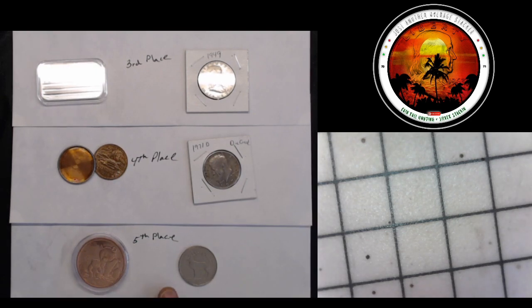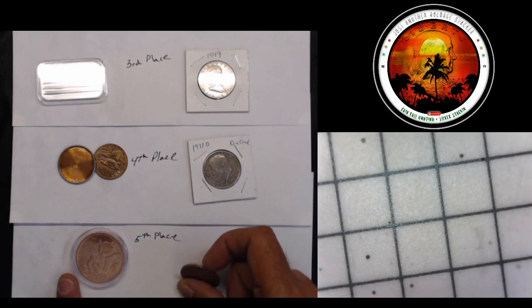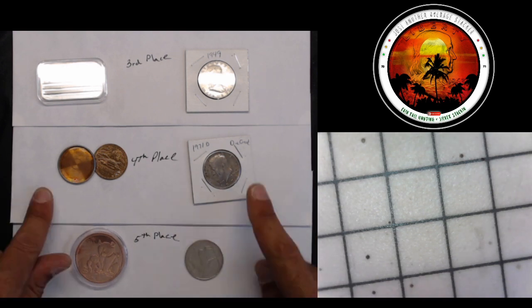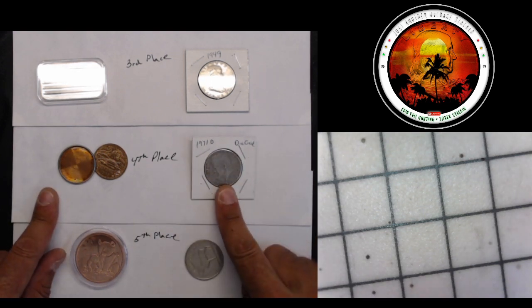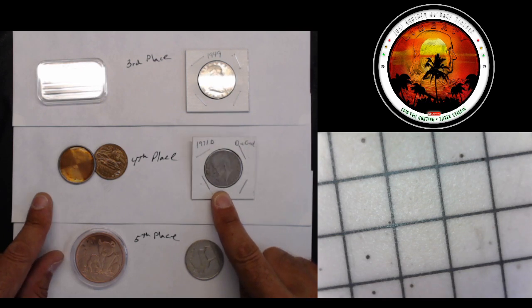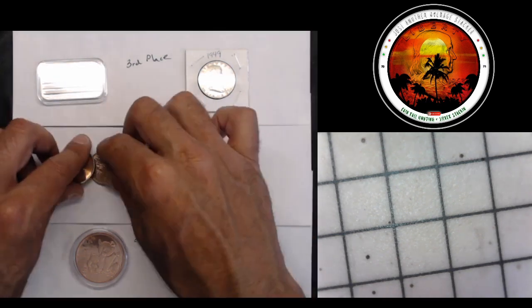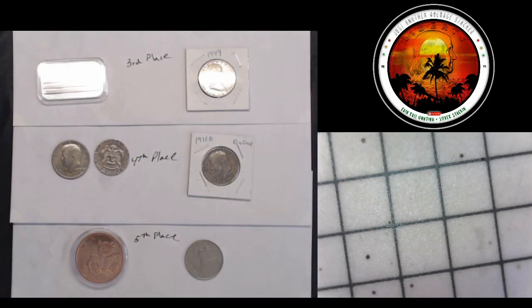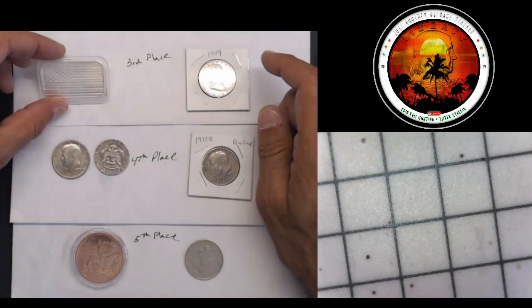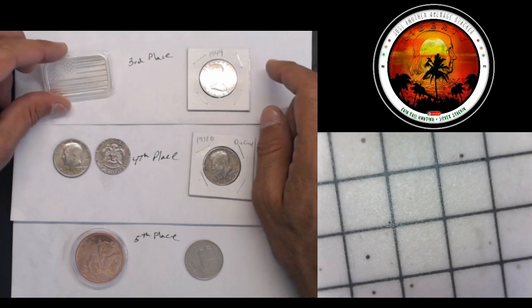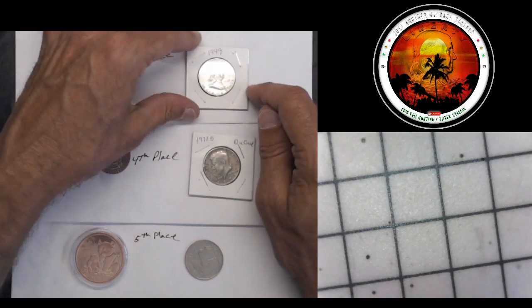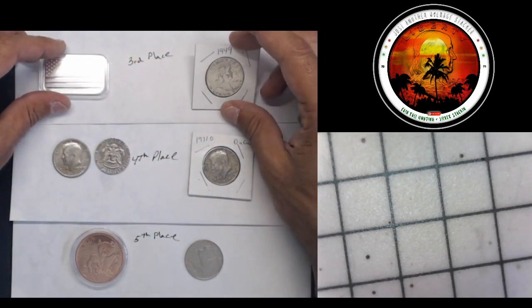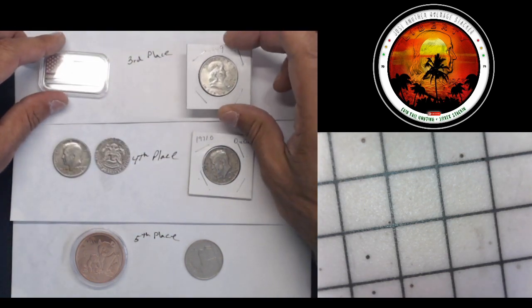Let's do a quick recap. Fifth place: one ounce copper bar and a 1990 one pound Eire. Second place—or excuse me, fourth place—is this 1971 D Kennedy with a die crack and a 1971 D magic coin. Third place: one ounce 999 fine silver American flag bar as well as a 1949 Benjamin Franklin half dollar, which is a semi-key date.